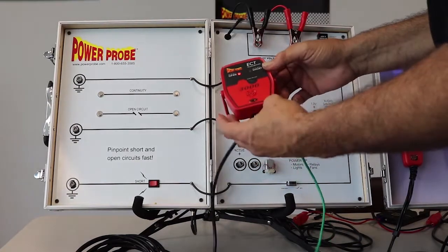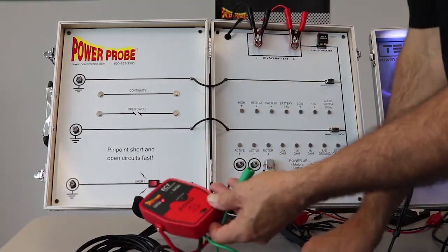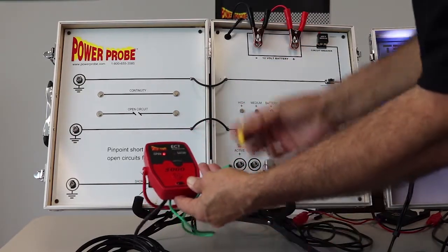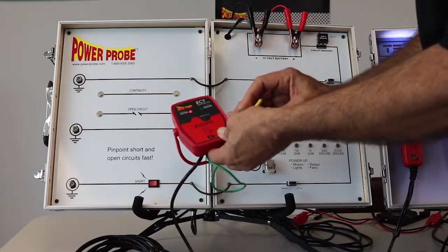Now the transmitter is powered up and it's putting a signal out here. You can use a variety of adapters. We have alligator clip adapters, back probe adapters, piercing adapters, whatever it takes to connect to the circuit.